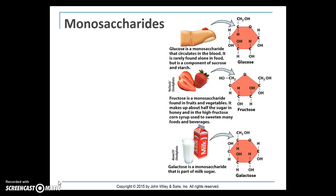Carbohydrates are not really a storage form of energy — they're typically for immediate use, though we do store a little bit to control the amount circulating in our body. Fructose is a monosaccharide found in fruits and vegetables that makes up about half the sugar in honey and in the high-fructose corn syrup used to sweeten many foods and beverages. Galactose is a monosaccharide that is part of milk sugar.